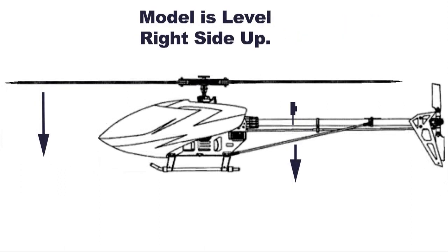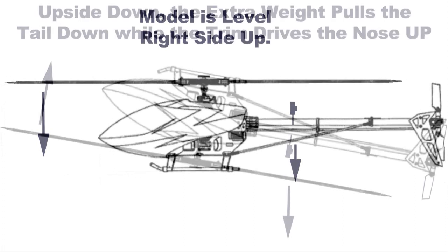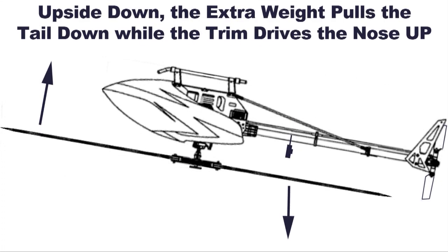Now the model's back to level. But look what happens if I go upside down. The GoPro's still pulling the tail down, but now the adjustment I made is pushing the nose up, which means that upside down I'm going to have twice as much drift.